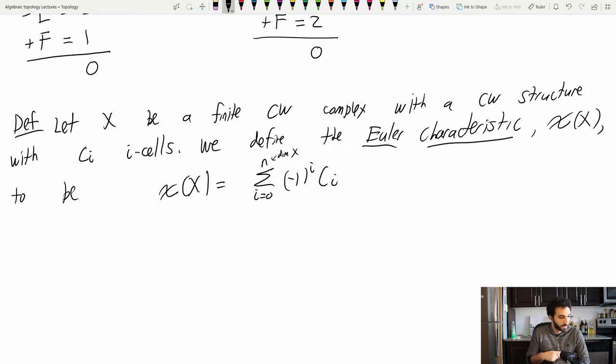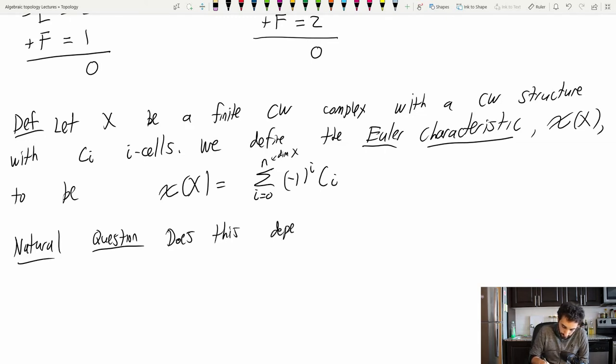Well, here's a natural question. Does this depend on the CW structure? You know, as topologists, we don't necessarily care about a particular CW decomposition. We use them to study the underlying topological spaces. That's what we care about. So I hope this doesn't depend on the CW structure. In fact, in the examples we calculated, it didn't.